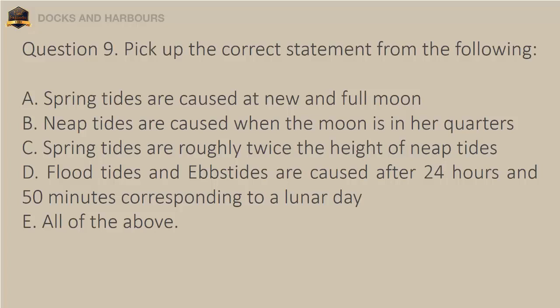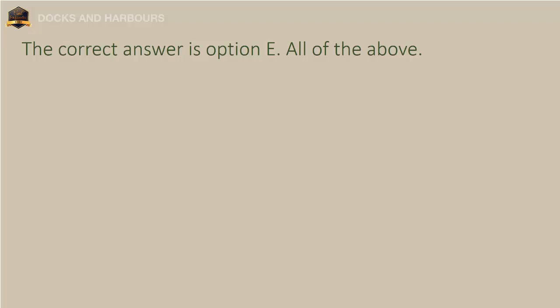Question 9. Pick up the correct statement from the following. A. Spring tides are caused at new and full moon. B. Neap tides are caused when the moon is in her quarters. C. Spring tides are roughly twice the height of neap tides. D. Flood tides and ebb tides are caused after 24 hours and 50 minutes corresponding to a lunar day. E. All of the above. The correct answer is Option E: All of the above.